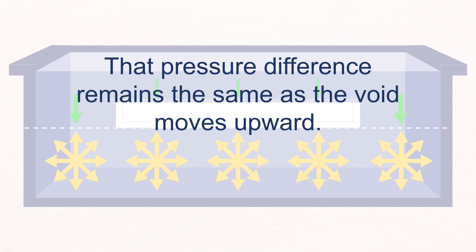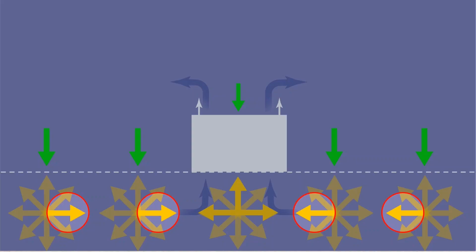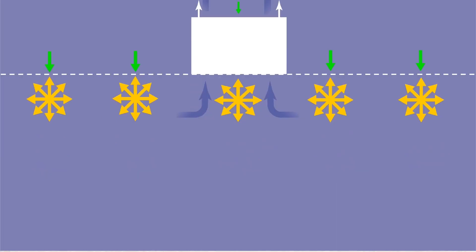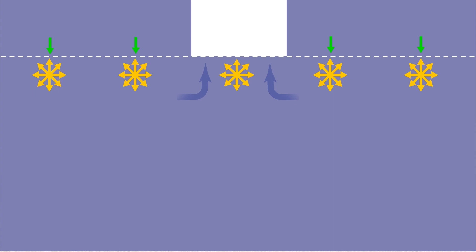Once the void begins moving upward, the pressure difference between the fluid pressure below and the weight pressure above remains the same. This is because as the void moves upward, the pressure below it equalizes, in accordance with Pascal's Law. Even though both the weight pressure and the fluid pressure decrease as you get higher in the pool, the difference between the two remains constant.